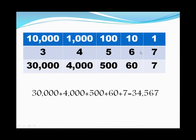So: 1 times 7 is 7, 10 times 6 is 60, 100 times 5 is 500, 1,000 times 4 is 4,000, and 10,000 times 3 is 30,000. You take all of these numbers and add them up: 30,000 plus 4,000 plus 500 plus 60 plus 7, which we all know equals 34,567.